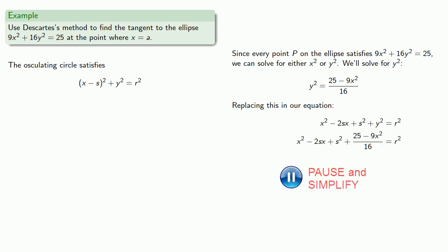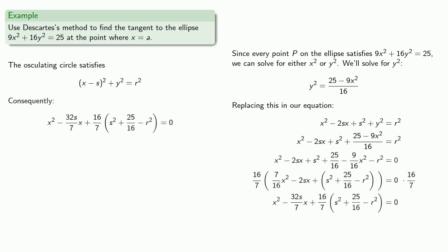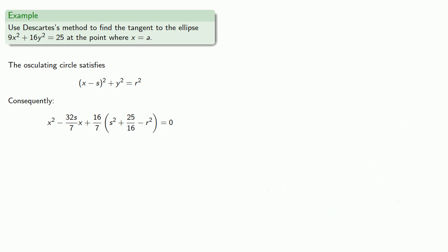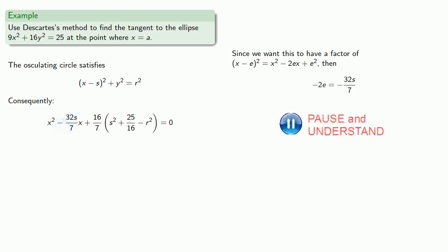And again, a quadratic will ordinarily have two solutions, but since we want this to have a factor of (x minus e) squared, then we need minus 2e, the coefficient of x, to be minus 32s over 7, the coefficient of x. And remember, our goal is to find s, so we solve for s. So, if s is 7/16 e, then we have a repeated root at x equal to e.